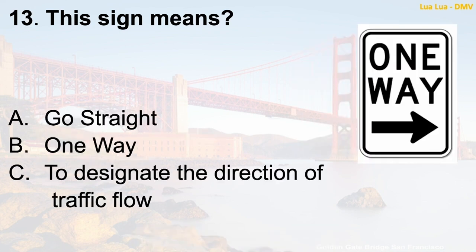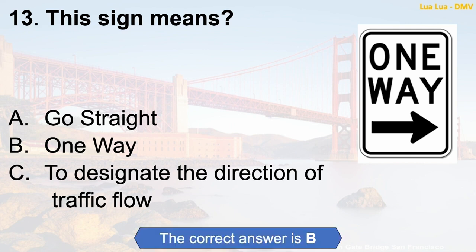Question 13: This sign means — A. Go straight. B. One way. C. To designate the direction of traffic flow. The correct answer is B: One way.